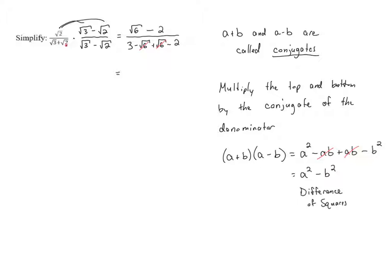In this problem, where we had the square root of 3 plus the square root of 2, we're effectively squaring both terms, which gets rid of the radicals. The square root of 3 squared gives us 3, and the square root of 2 squared gives us 2. So once those root 6 terms cancel in the denominator, we're left with root 6 minus 2 on top, and 3 minus 2 equals 1 on the bottom. Anything divided by 1 is itself, so our final answer is the square root of 6 minus 2.